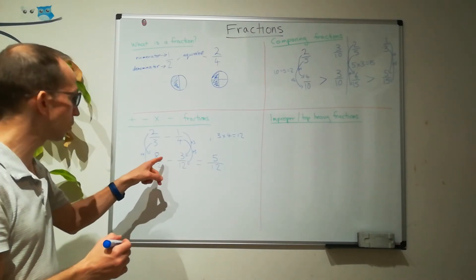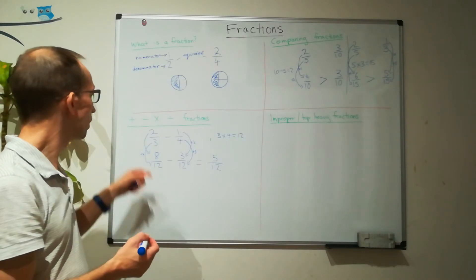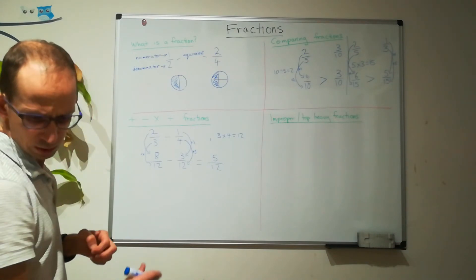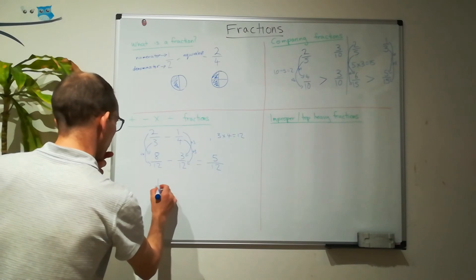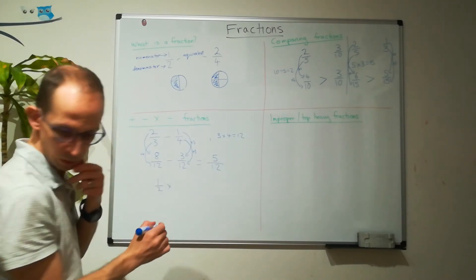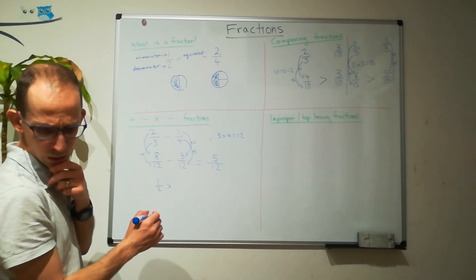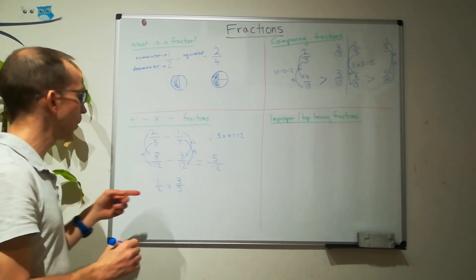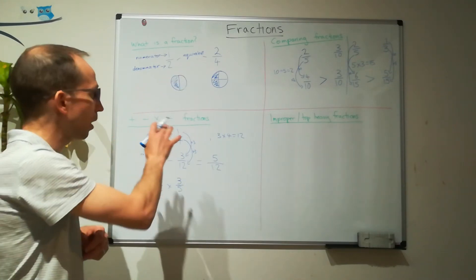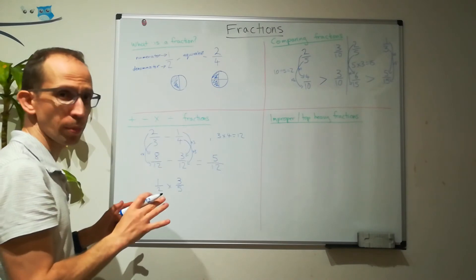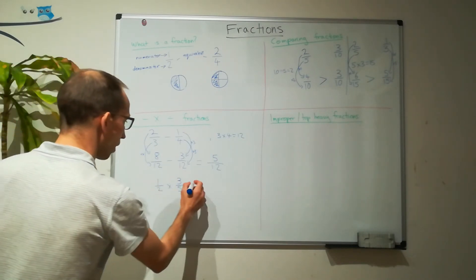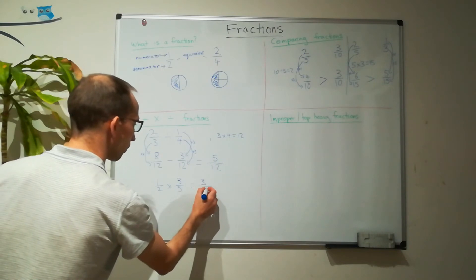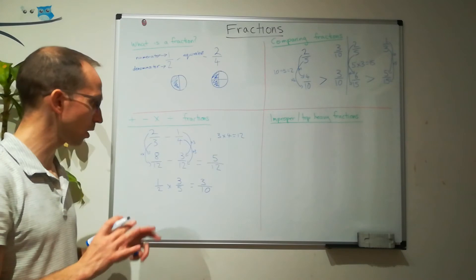If this had been a plus instead, we'd do eight plus three, which would be eleven-twelfths. Now for multiplying: let's have a half multiplied by three-fifths. For multiplying fractions, it's different — it doesn't matter about the denominators. We multiply the tops: one times three is three. And we multiply the bottoms: two times five is ten. So the answer is three-tenths. Multiplying fractions is probably the most straightforward.